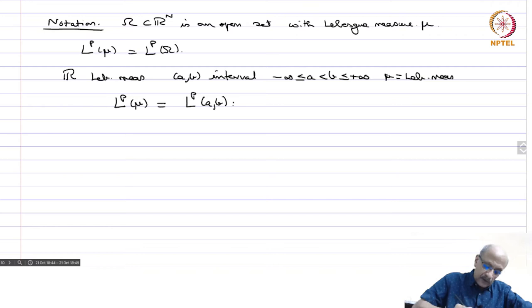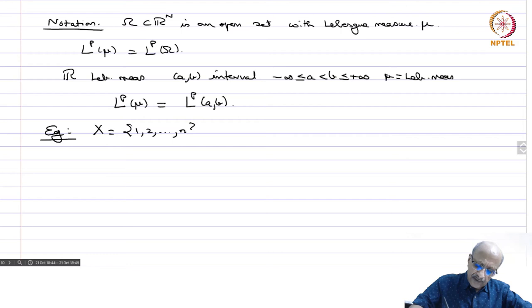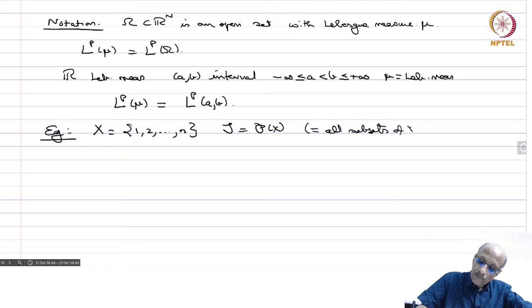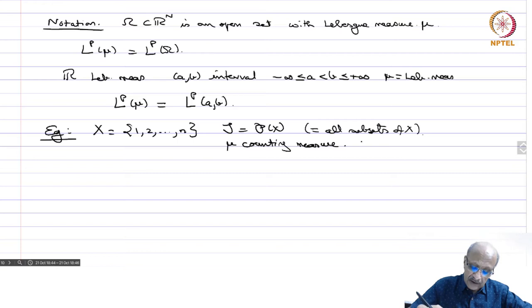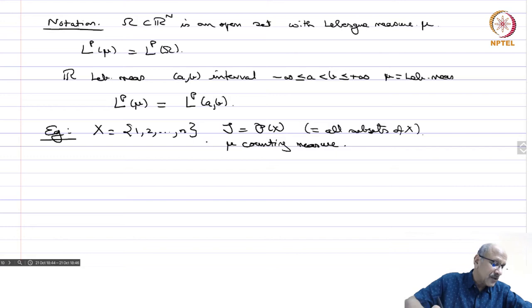Now let us look at some familiar examples. Take X = {1, 2, ..., n}, S is the power set of X (that means all subsets), and μ is the counting measure. That means μ(A) equals the number of elements in A, and it is infinite if A is an infinite set. Then integration with respect to μ is just summation — a function on X is just a set of numbers, and integration is adding the values.